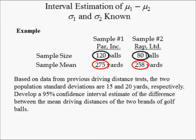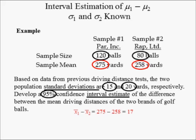Based on the data from previous driving distance tests, the two population standard deviations are assumed to be 15 and 20 yards respectively. Develop a 95% confidence interval estimate of the difference between the mean driving distances of the two brands of golf balls. The difference in sample means is equal to 275 minus 258, or 17 yards.